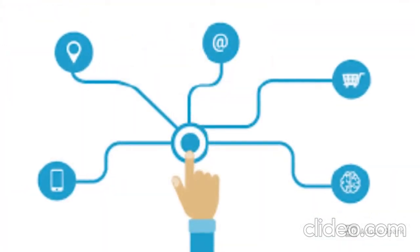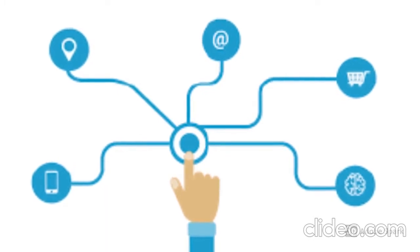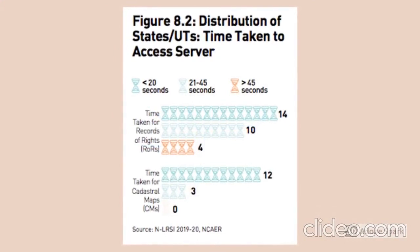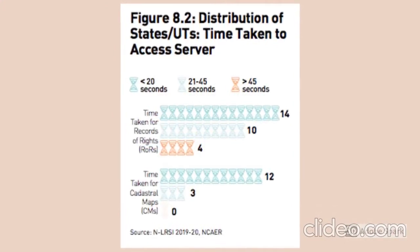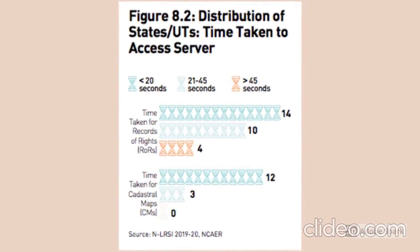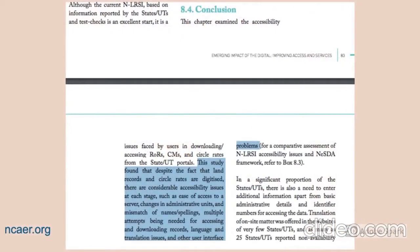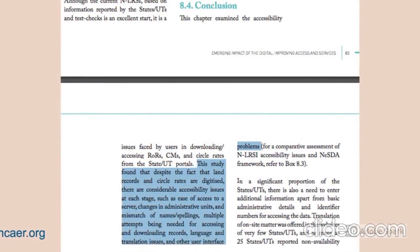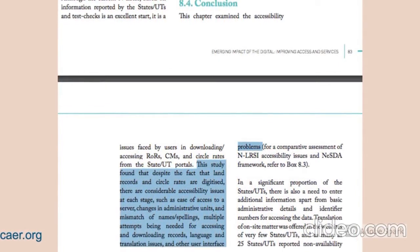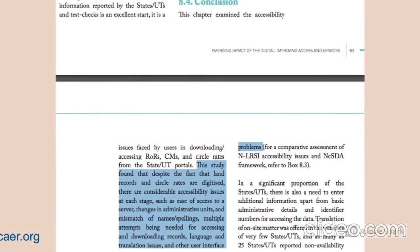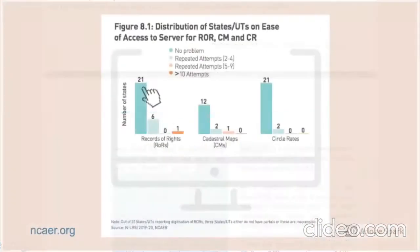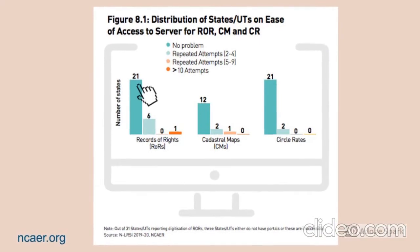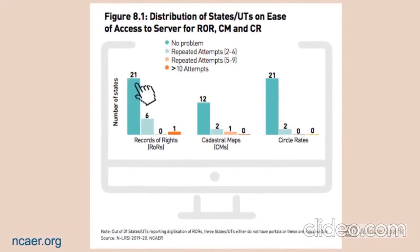Digitization has brought advantages in the areas of computerization of records and ease of access. According to a framework built by the National Council of Applied Economic Research to track accessibility of records, the major problems found were the need for multiple attempts to access and download records, misspellings of names and addresses, language and translation issues, and other interface-related problems. This shows that even though records and circle rates are digitized, there is still a considerable amount of trouble faced while accessing them.